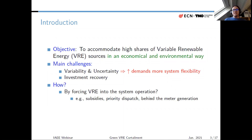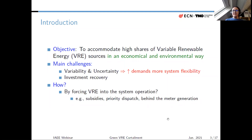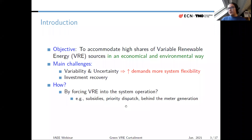One way of forcing variable renewables into the system is by regulation — by law giving them priority of dispatch, so they are dispatched first at all costs. Renewables also force themselves into the system through behind-the-meter generation like rooftop solar, which is generally uncontrolled. Additionally, subsidies are typically based on energy production, incentivizing renewables to bid negatively in the market to force themselves in.